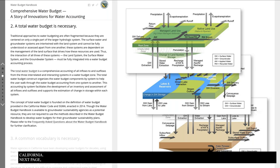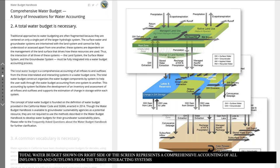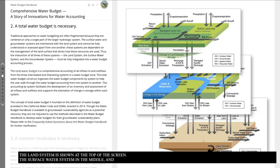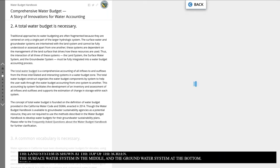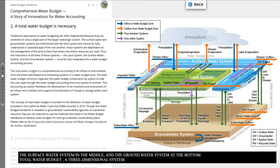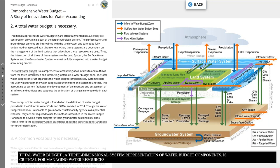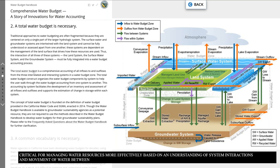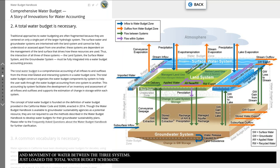The total water budget shown on the right side of the screen represents a comprehensive accounting of all inflows to and outflows from the three interacting systems in an area. The land system is shown at the top of the screen, the surface water system in the middle, and the groundwater system at the bottom. This three-dimensional system representation of water budget components is critical for managing water resources more effectively based on an understanding of system interactions and movement of water between the three systems.